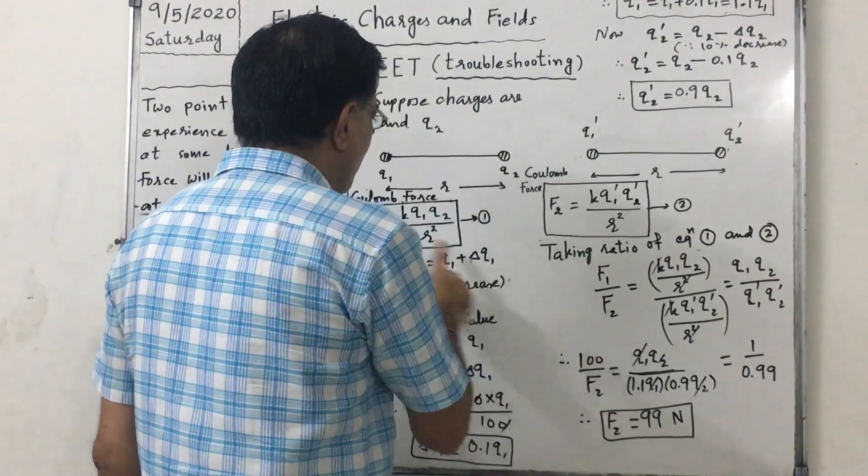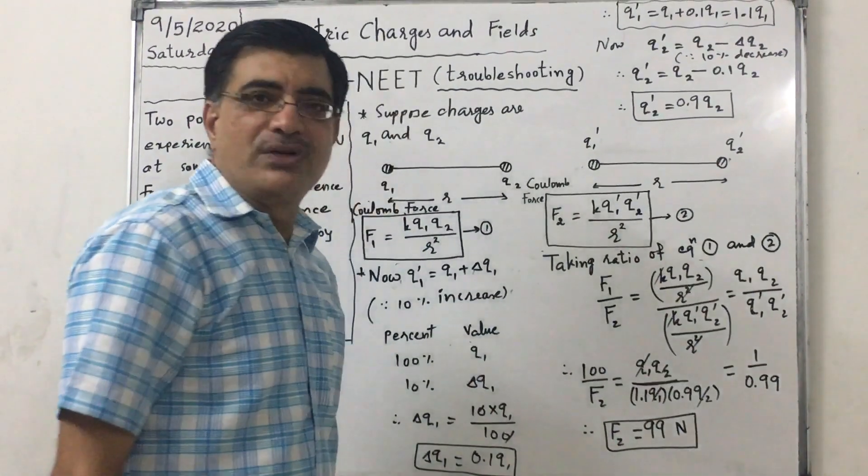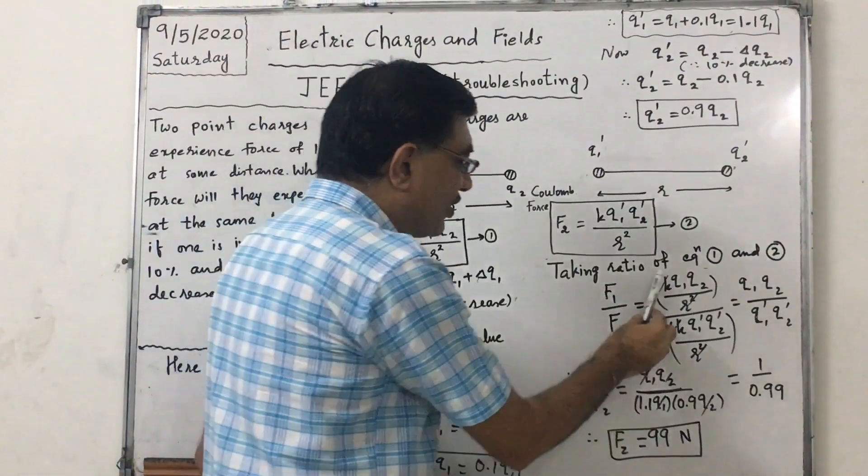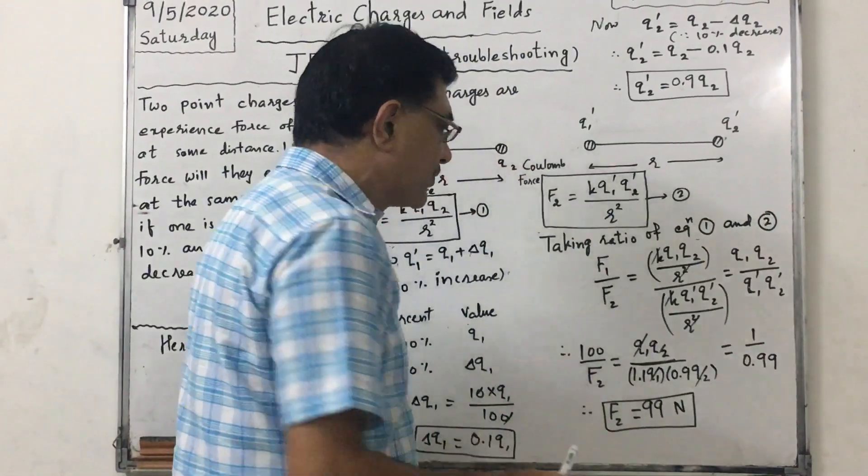F1 upon F2 equals K Q1 Q2 upon R squared divided by K Q1 dash Q2 dash upon R squared. So K by R squared cancels. Q1 Q2 upon Q1 dash Q2 dash. Putting the values.